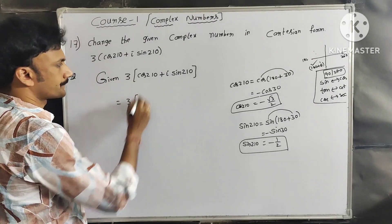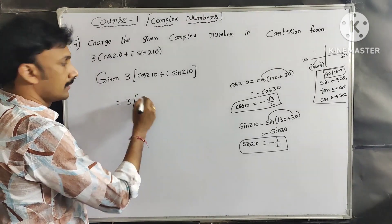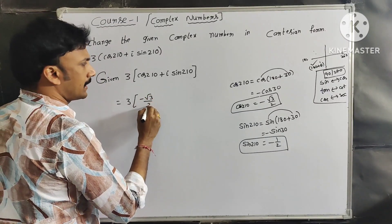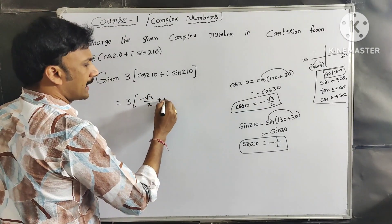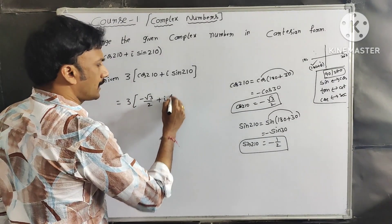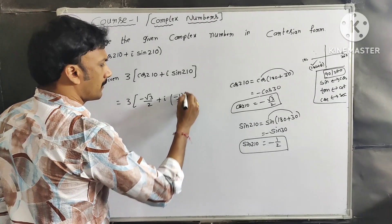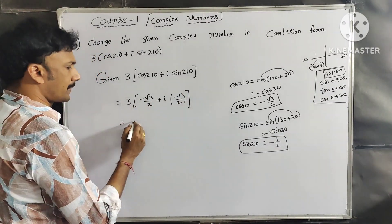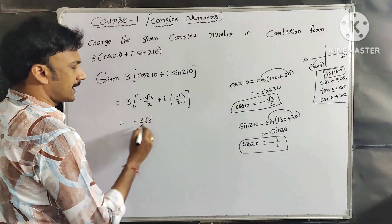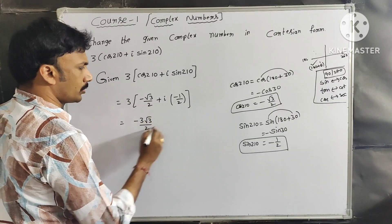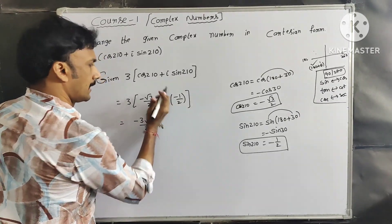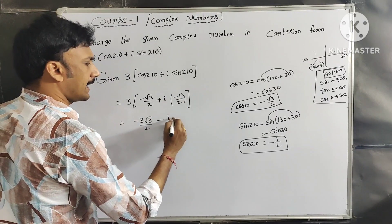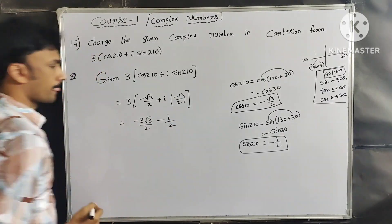Now we substitute the values: 3(cos210° + i·sin210°) = 3·(−√3/2) + i·(−1/2). That gives us 3 into −√3/2 plus i into −1/2.